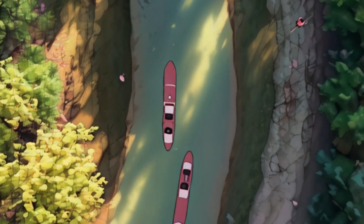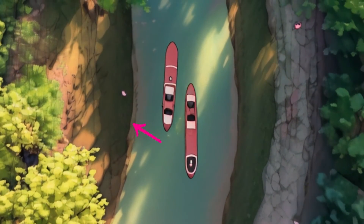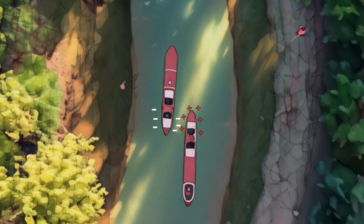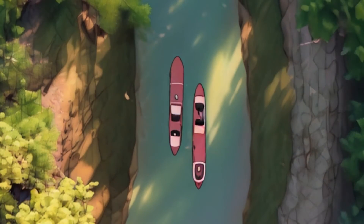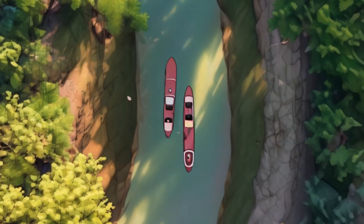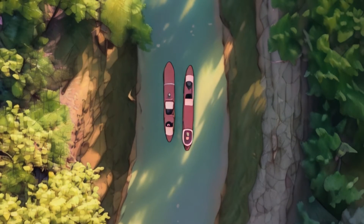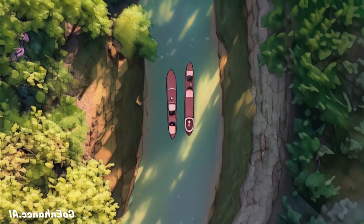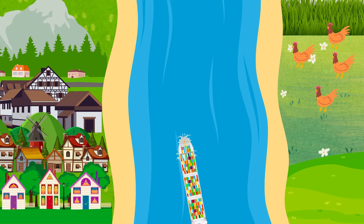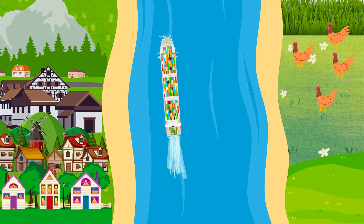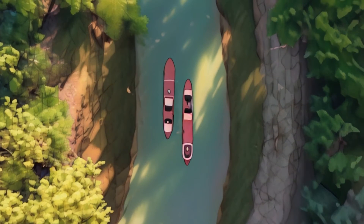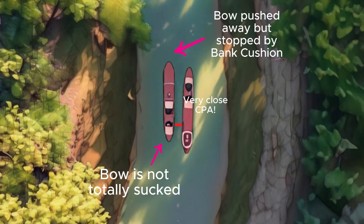Going back to the scenario, the stern of Ship B gets pushed a little by the bow of Ship A as the overtaking starts. Ship A is faster than Ship B; hence its greater positive force is able to repel the suction force of Ship B's stern. As soon as Ship A's port quarter gets in range with Ship B's starboard quarter, it reacts by slightly getting attracted to Ship A. Though both of their quarter sections have suction forces present and both of their bows pushing one another, this wasn't enough to create contact between them because of another force present called the bank cushion effect. The bank cushion effect is a hydrodynamic force that describes the tendency of the ship's bow to be pushed away from the bank as it gets closer, due to the high-pressure buildup between the bank and the ship's bow.